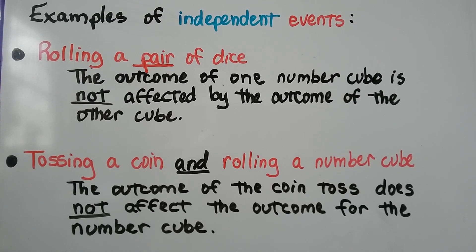Some examples of independent events would be rolling a pair of dice — we have two number cubes and the outcome of one is not affected by the outcome of the other. Another example is tossing a coin and rolling a number cube: two separate events that are independent of each other, where the outcome of the coin toss does not affect the outcome of the die.